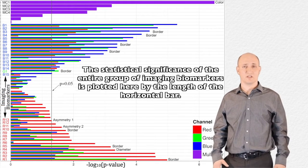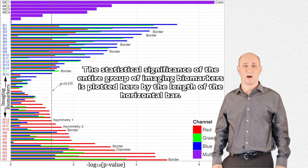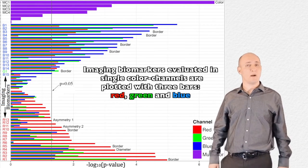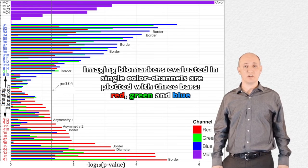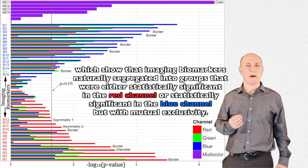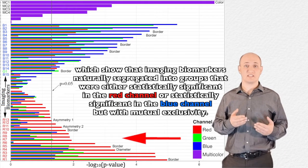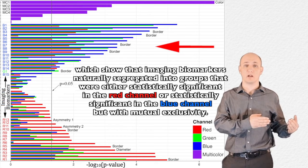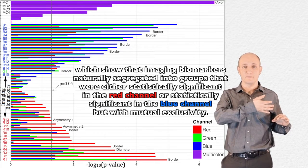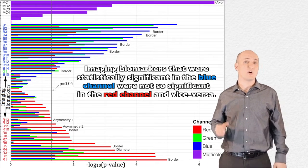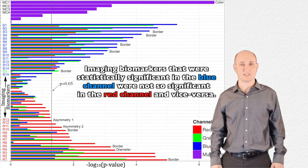The statistical significance of the entire group of imaging biomarkers is plotted here by the length of the horizontal bar. Imaging biomarkers evaluated in single color channels are plotted with three bars — red, green, and blue — which show that imaging biomarkers naturally segregated into groups that were either statistically significant in the red channel or statistically significant in the blue channel, but with mutual exclusivity. Imaging biomarkers that were statistically significant in the blue channel were not so significant in the red channel, and vice versa.